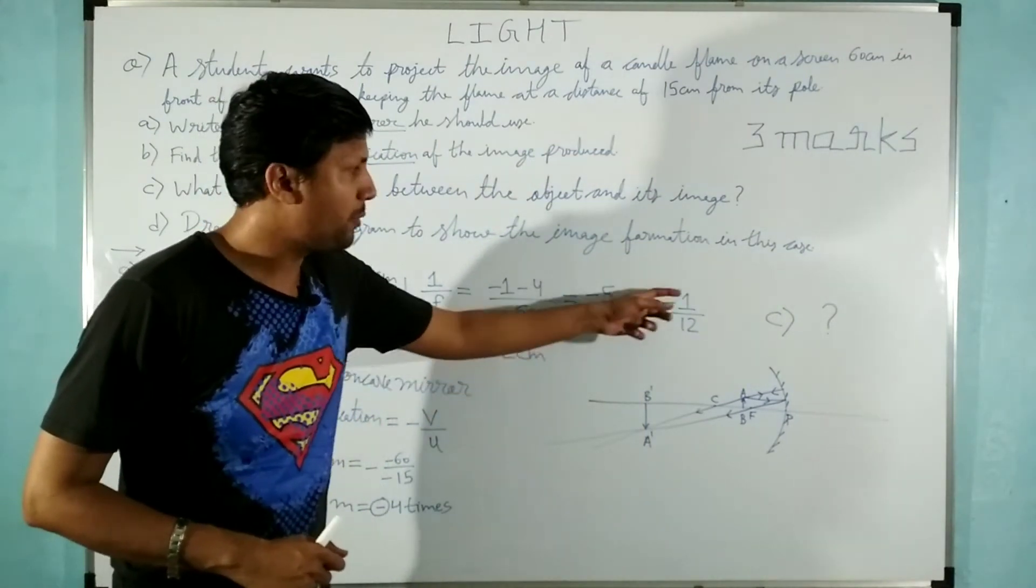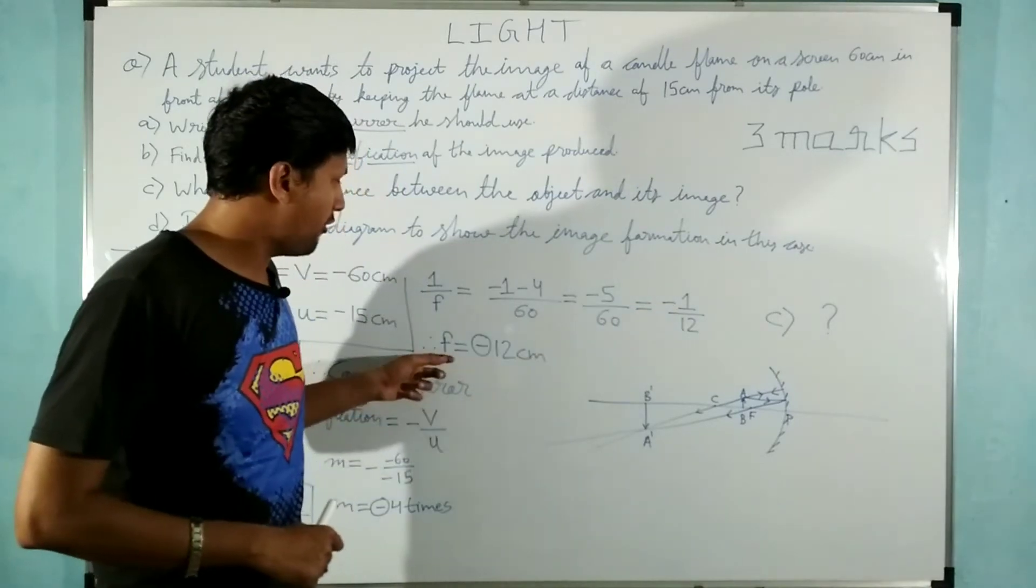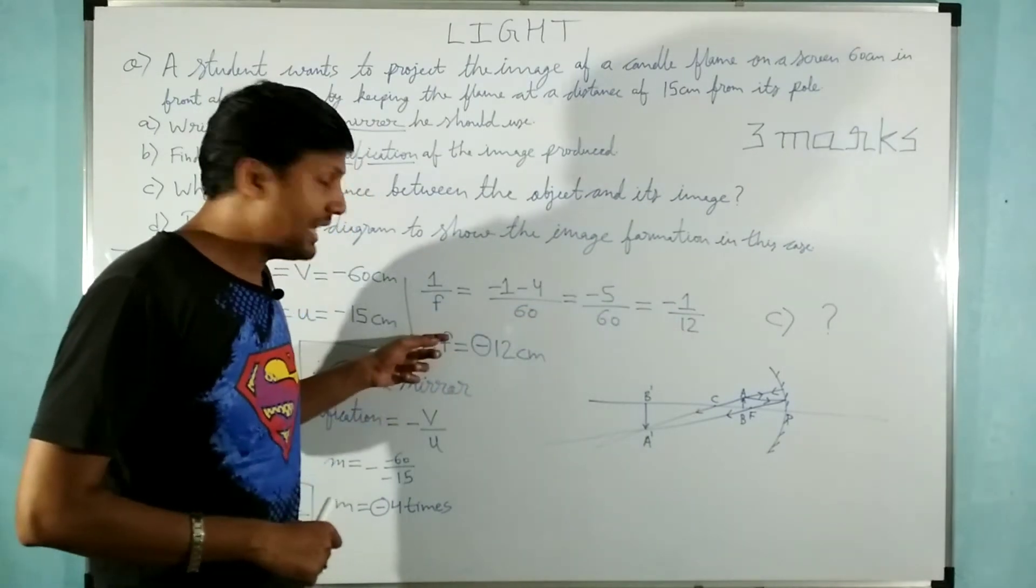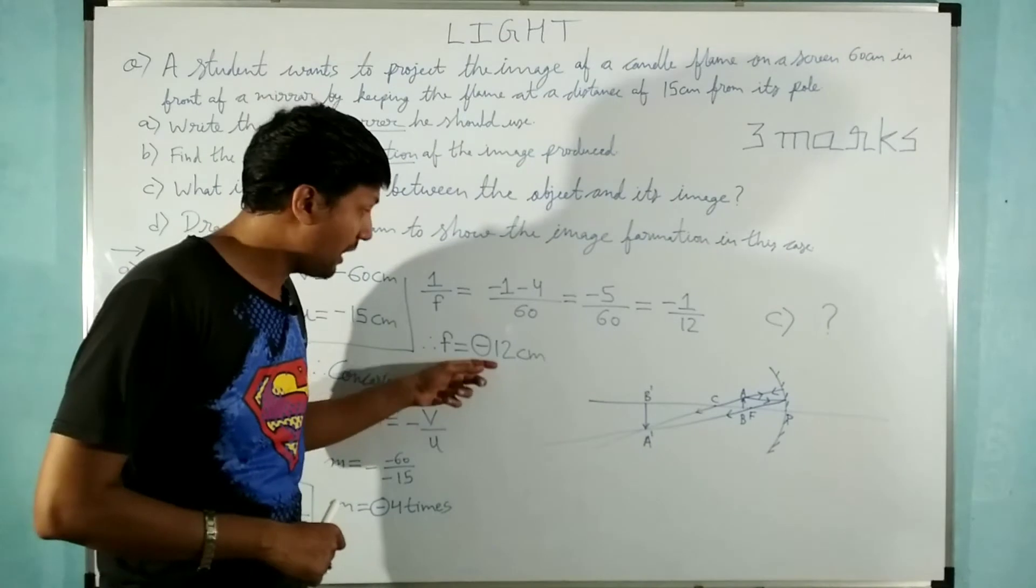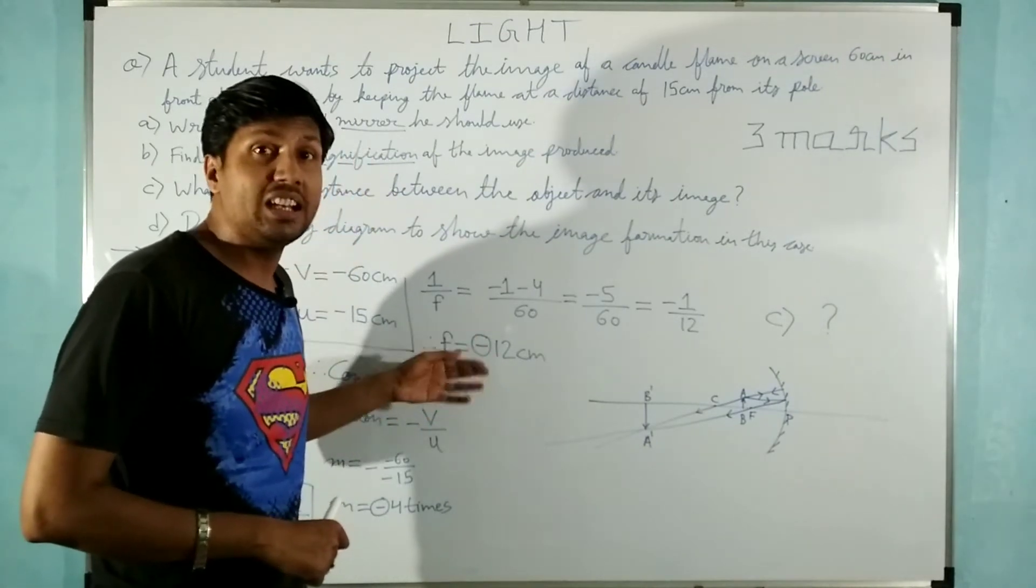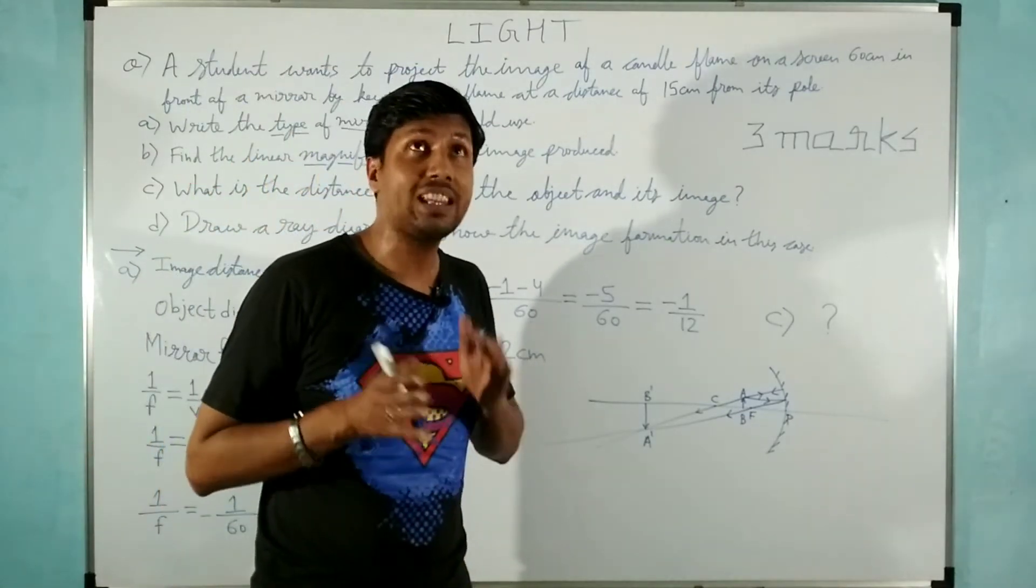One upon 12 will be the answer with negative sign. So focal length will be how much? One upon focal length will be minus one upon 12. Then focal length is minus 12 cm. The minus sign right here.